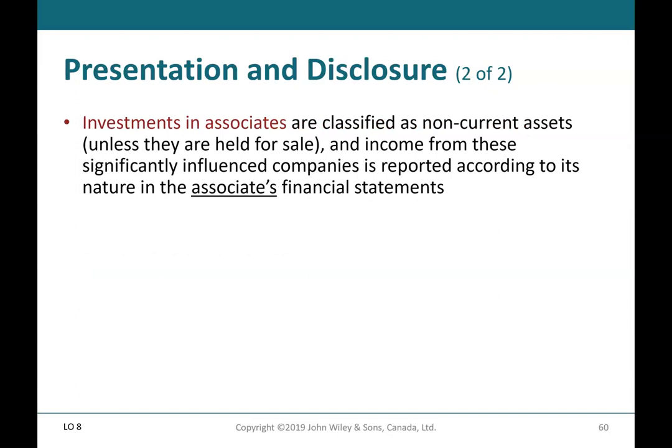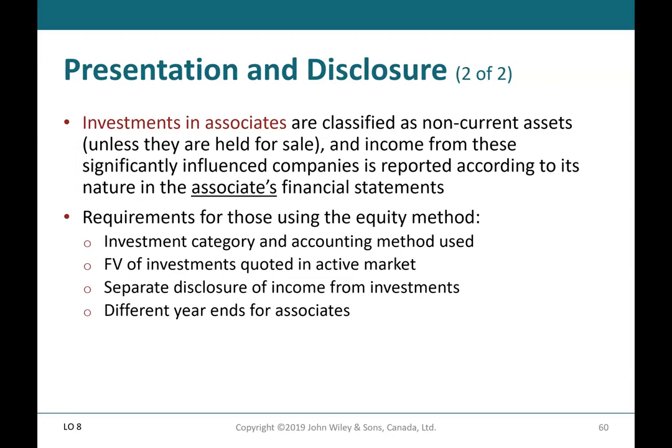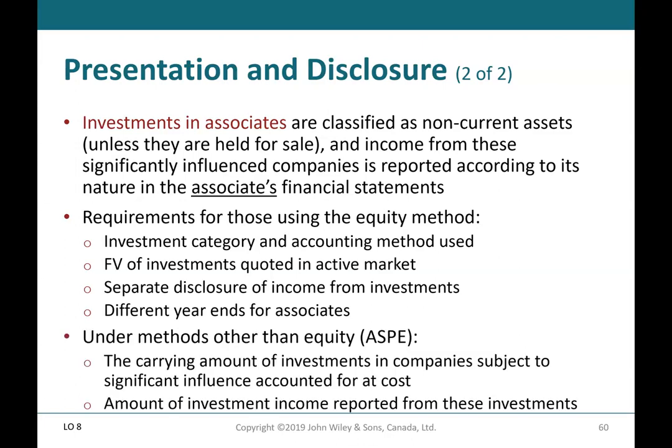Presentation and Disclosure (2 of 2): investments in associates are classified as non-current assets unless held for sale. Income from significantly influenced companies is reported according to its nature in the associate's financial statements. Requirements for those using the equity method include: investment category and accounting method used, fair value of investments quoted in an active market, separate disclosure of income from investments, and disclosure of different year-ends for associates. Under methods other than equity (ASPE), disclosure includes the carrying amount of investments in companies subject to significant influence accounted for at cost, and the amount of investment income reported.